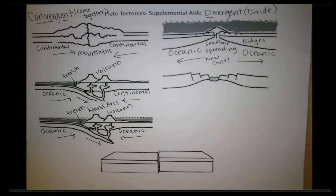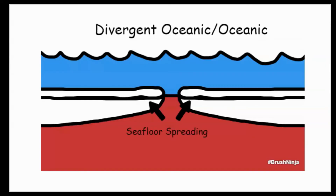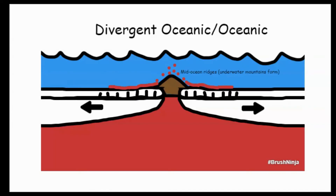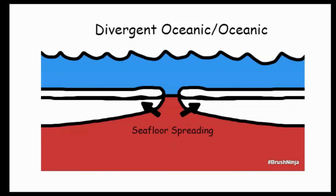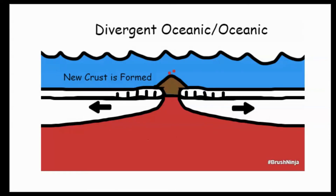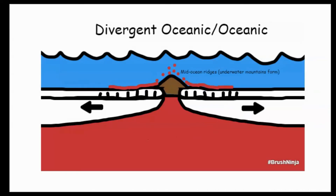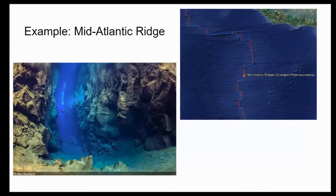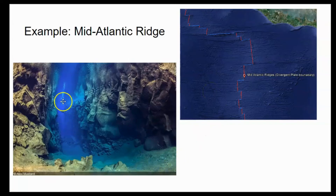Let's look at that a little bit closer. Here we have the animation where magma comes up and forces that crust outward, creating underwater mountains and underwater volcanoes and forming new crust, pushing those plates outward. A very common example of this is the Mid-Atlantic Ridge in the center of the Atlantic Ocean. Here we can see that underwater mountain range. There are also a few places on Earth where you can go to see those plates pushing apart.